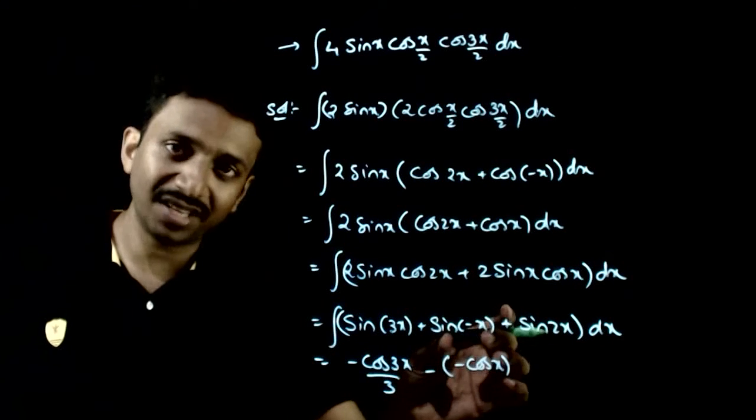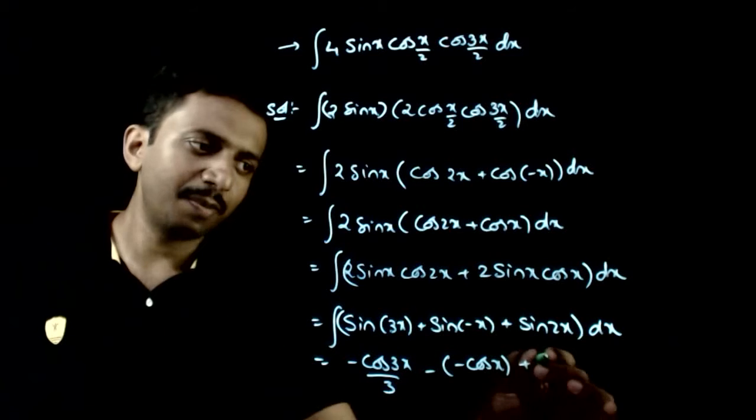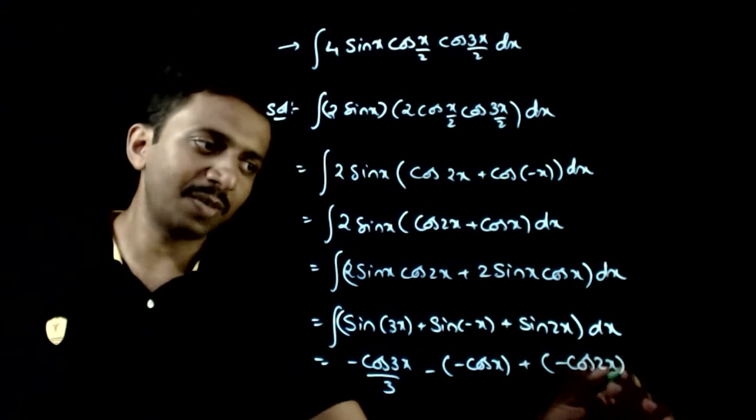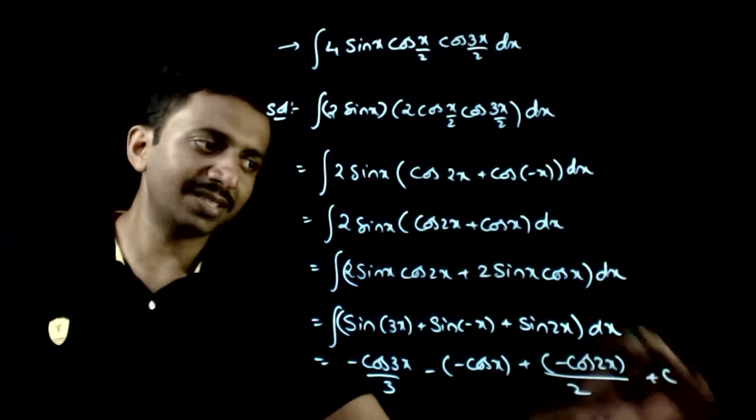This is minus of sin x minus of minus cos x plus sin 2 x can be written as minus cos 2 x by 2 plus c.